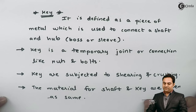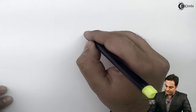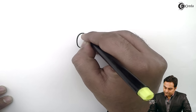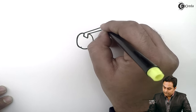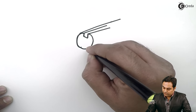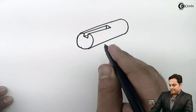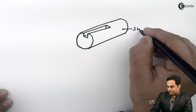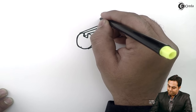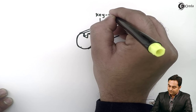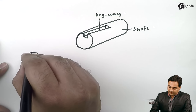Now I will draw a diagram of a simple key and explain how it is used as a temporary connection. Here suppose we have a shaft which has some value of its diameter, and that shaft will also have some length. As we can see, this is a shaft.